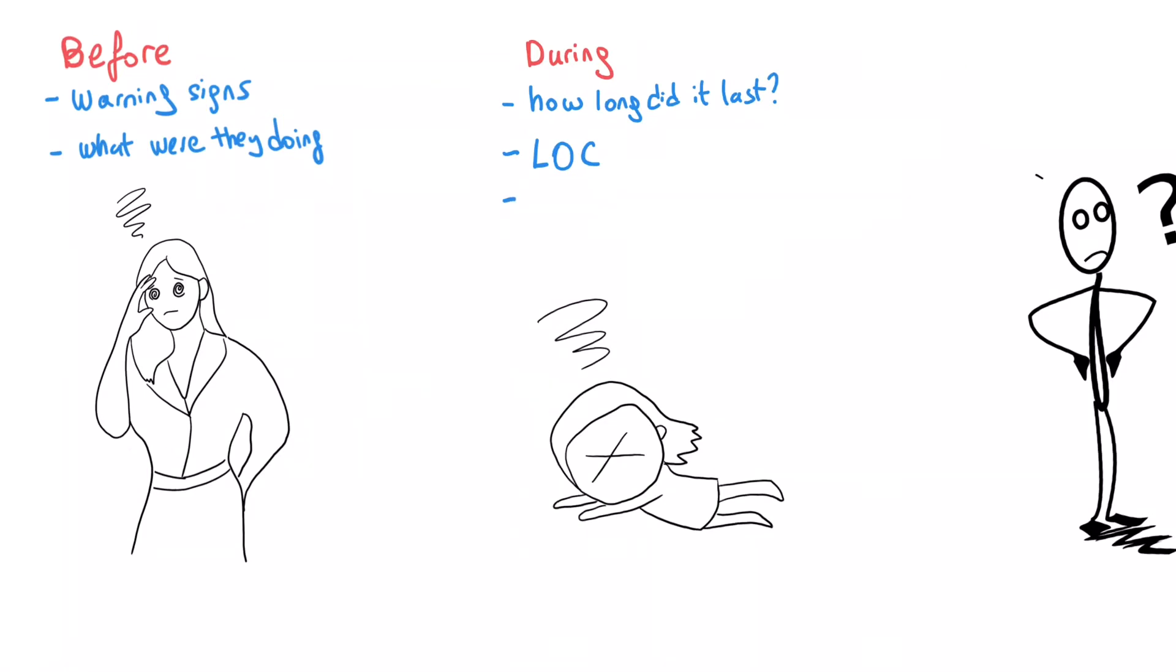Now this is very important for your differential to ask more specific questions. Were they floppy? Were they jerking? Were they stiff? You need to ask floppy, any jerky movement, any incontinence, any tongue biting, any change in their complexion, were they more pale, so skin changes. This is quite important for you to have a broad idea of what may be your differentials and what may be going on.